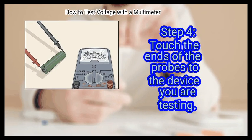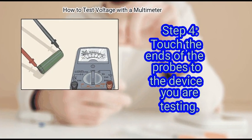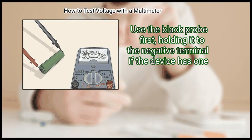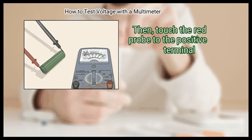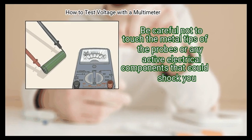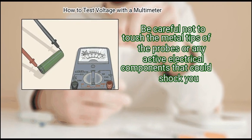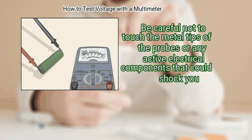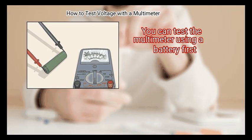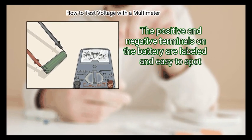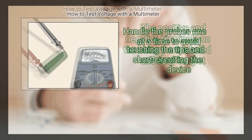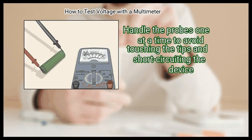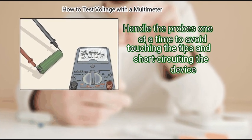Step 4: Touch the ends of the probes to the device you are testing. Use the black probe first, holding it to the negative terminal if the device has one. Then touch the red probe to the positive terminal. Be careful not to touch the metal tips of the probes or any active electrical components that could shock you. You can test the multimeter using a battery first. The positive and negative terminals on the battery are labeled and easy to spot. Handle the probes one at a time to avoid touching the tips and short-circuiting the device.